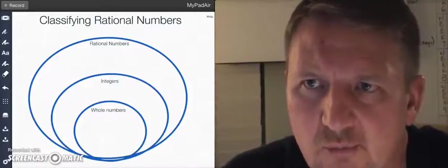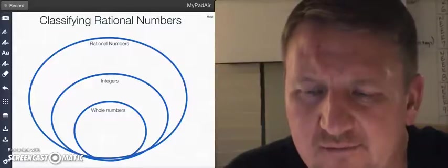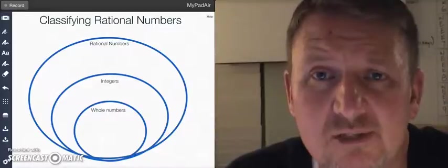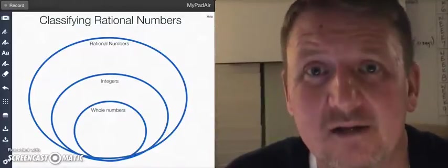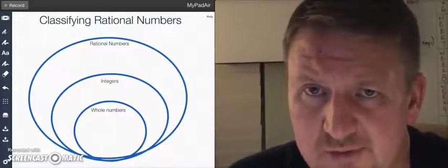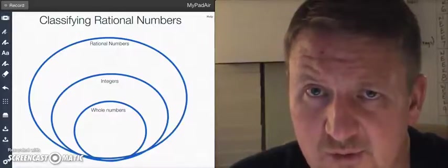So on the board here I have another Venn type diagram. I've shown one before when we talked about whole numbers and integers, and we're going to add a circle to that. I believe I even described that to you. So first of all, let's talk about whole numbers, just make sure we're on the same page.